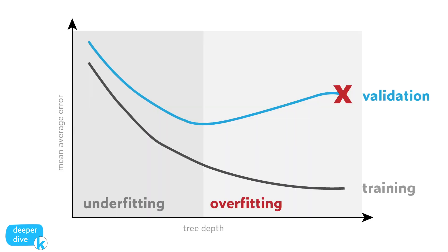Let's think about this for a second. If we allow our decision tree to create thousands of leaf nodes, we could hypothetically end up with a tree that has a leaf for every price within our training dataset. This would be an example of overfitting because the model would fit our data almost perfectly, making it challenging to generalize to a new dataset. When we overfit, the model doesn't perform as well because the validation data doesn't always look like the training data. As the tree gets more complex, we see our validation error rise, and it becomes easier for the tree just to memorize all of the specifics in the training set than actually learning the general rules.